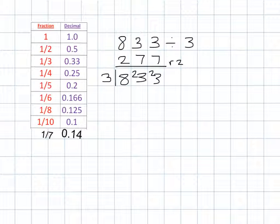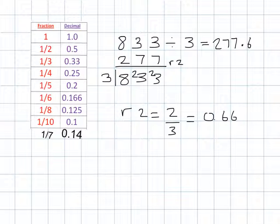Now, that remainder of 2, because we're dealing with the 3 times tables, is the same as 2 thirds. We can see over here that 1 third is worth 0.33. So I need to double the 0.33 to make 2 thirds. So 2 thirds is the same as 0.66. Therefore, 833 divided by 3 is 277.66 or 277 and 2 thirds.